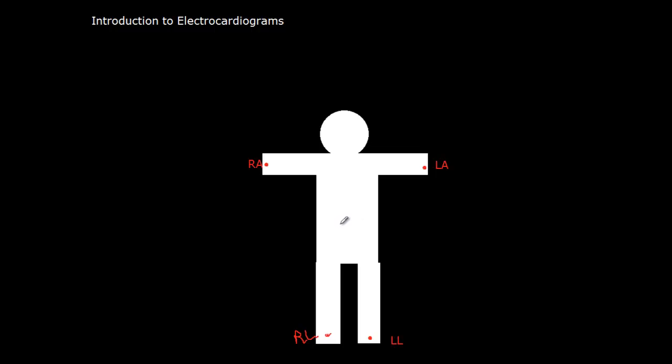Just as a bit of trivia, during a stress test, limb leads will actually often be placed on the body trunk. And that is to avoid movement artifacts. So if you're on a treadmill going back and forth, the movement of your limbs will confuse the voltage readings. So they usually put them on the trunk.